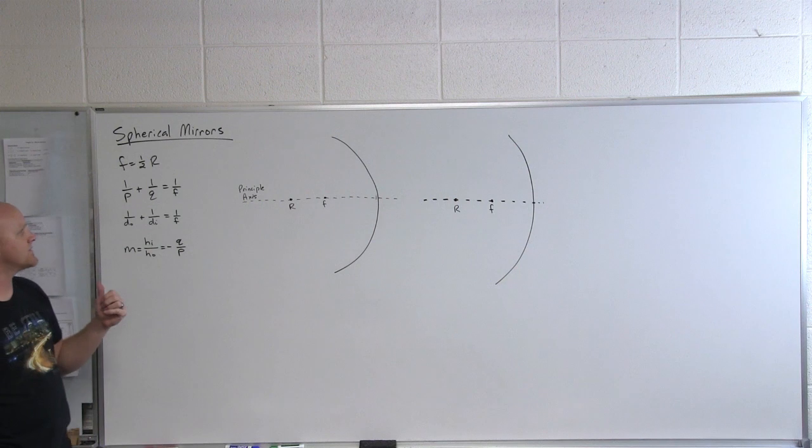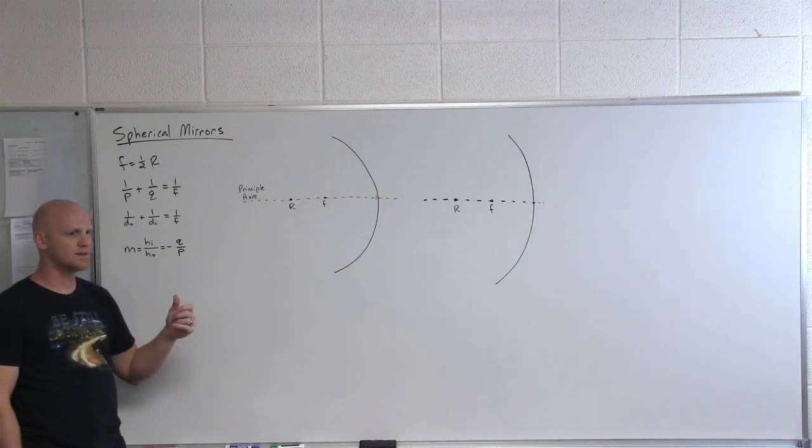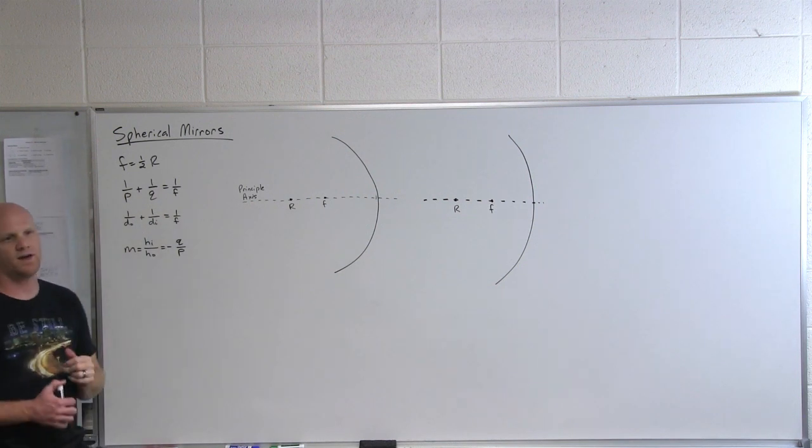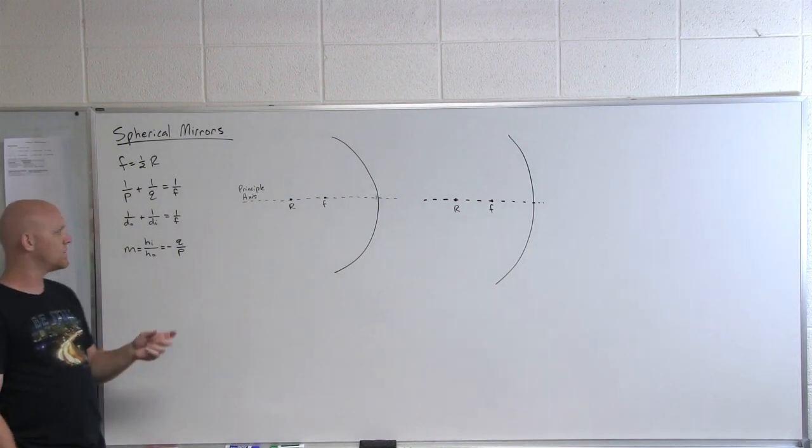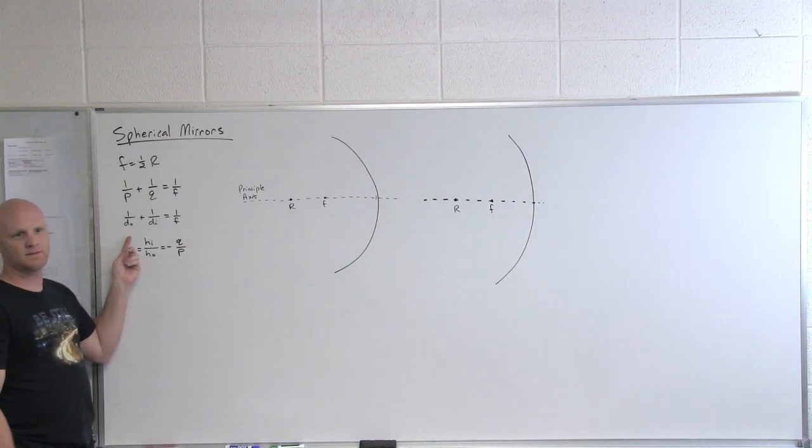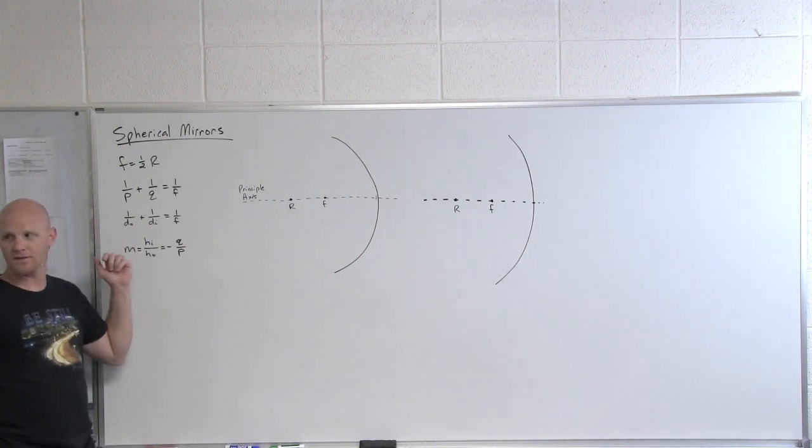Let's talk about what that focal distance actually means. If I had light rays coming from an object that was infinitely far away, well then DO here would be infinity. And what's 1 over infinity? Zero.